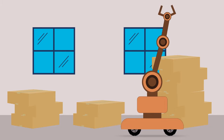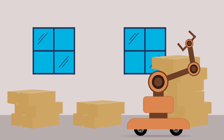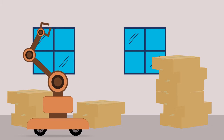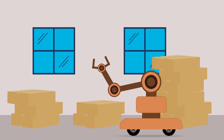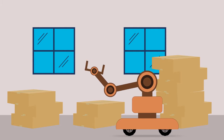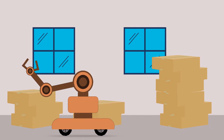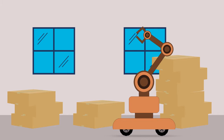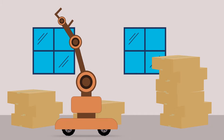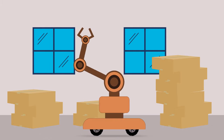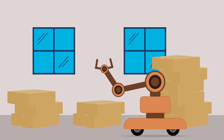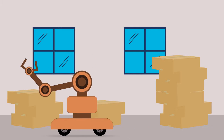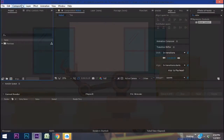Hey everybody and welcome back to another episode of Seven Minute AE Tutorials, where you learn AE tips, tricks and shortcuts in less than seven minutes — no BS, just AE. In this episode I'm going to show you how to create a simple flat robotic machine with moving parts. You'll learn some basics about how to parent layers as well as how to use the slider control to your advantage. This project is another example of just how powerful shape layers are in After Effects.